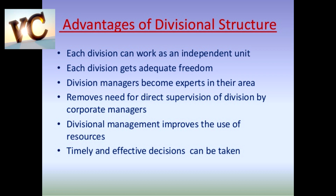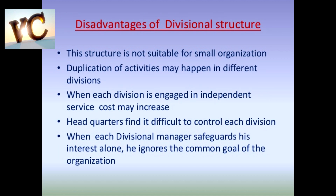Fourth: flexibility — fast decision making hoti hai toh it leads to flexibility, expansion and growth; baaki ke products ko koi effect nahi hoga, baaki ke departments mein changes nahi karne padenge. Ab disadvantages kya hain. Pehla: more resources are required — har department ko alag-alag resources chahiye, unki alag needs hain. Second: product focus — company ki overall growth nahi dekhte, apne product ke department ko dekhte hain; overall company growth se matlab nahi. Third: conflict — conflict hota hai on allocation of resources, kisi department mein zyada resources jaate hain, kisi mein kam — bifurcation of resources important hoti hai.